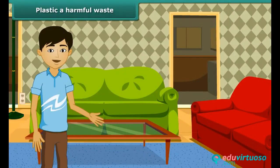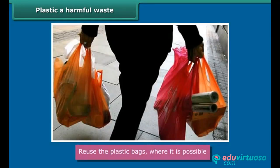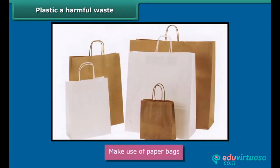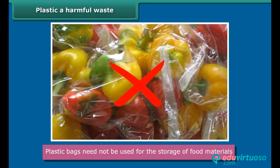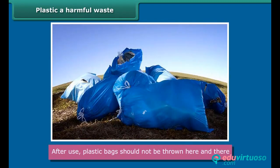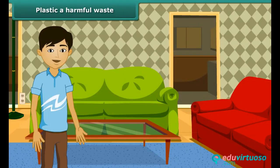We should follow these methods during disposal of plastics: stop use of plastic bags; if you do use them, reuse plastic bags where possible; make use of paper bags; use jute or cloth bags. Plastic bags need not be used for the storage of food materials. After use, plastic bags should not be thrown here and there. Burning of plastic bags is very harmful. We should also not use plastic bags for the disposal of kitchen waste.